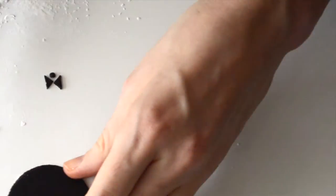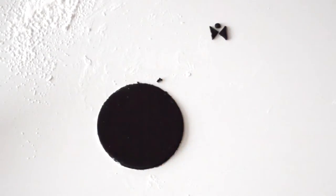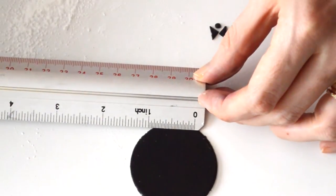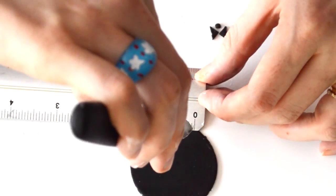Now we need to figure out how far apart we want the space to be that we're cutting. I decided that about three quarters of an inch is about the right size, so I'm just going to mark that.